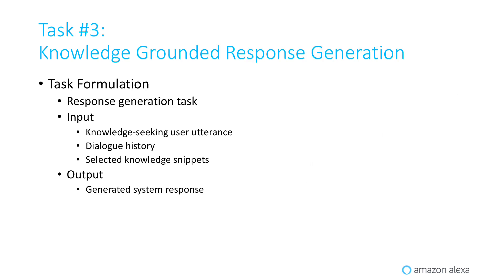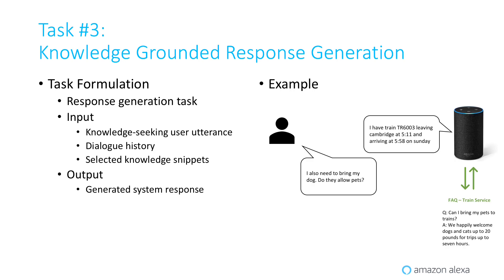The final task in our pipeline is knowledge-grounded response generation. We take the user turn's dialogue history and the selected knowledge snippets from the previous task, then generate the final system response grounded on the knowledge. For this example, we could expect a system response providing the correct information and connecting naturally from the dialogue context.